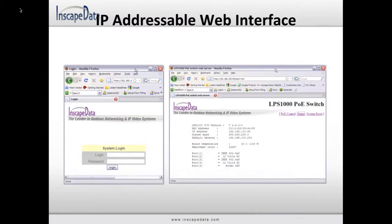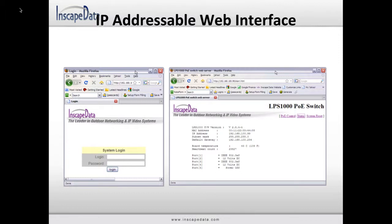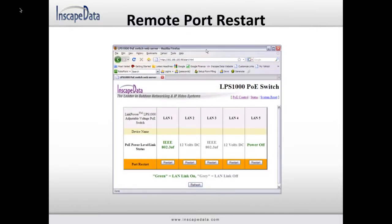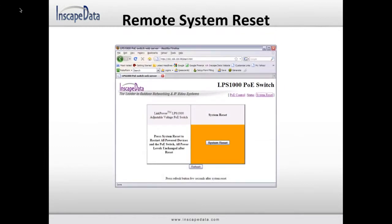The Link Power LPS 1000 features an IP addressable web interface. Through the web interface, the user may check the status, restart, and power cycle attached PoE devices. Restarting PoE devices remotely is a convenient, fast, and cost-effective way to deal with equipment lockup issues. Save cost on maintenance and service calls with a click of a mouse button.